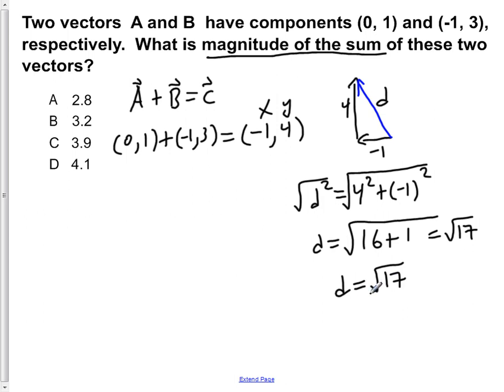Now the square root of 17 is approximately equal to 4.1. So we know that our answer is D.